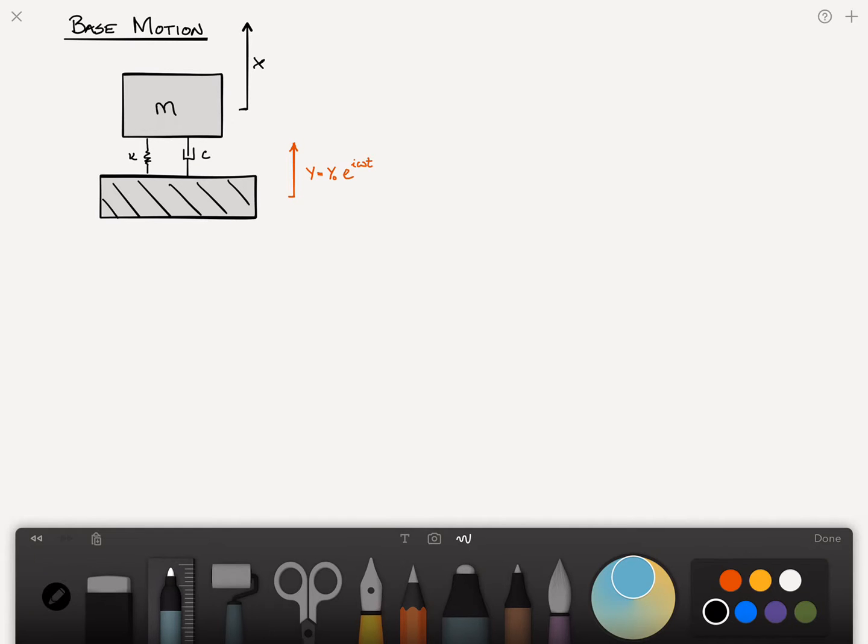We know that the first thing we'd need to do is draw a free body diagram, where we separate the mass from the supports. And we replace each of them, each of the supports that we've cut, with a force. So we've got one force here, and we've got another force here.